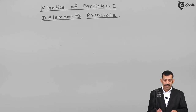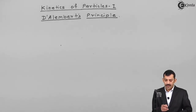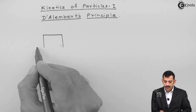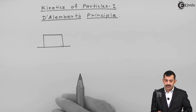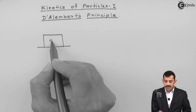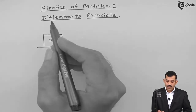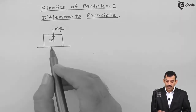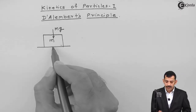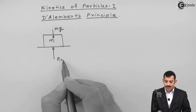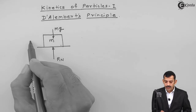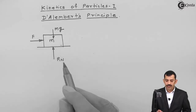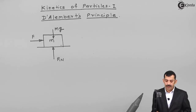Now if we will take any block of say mass here, this one is one block which is at rest on a horizontal plane. A block is at rest initially. Mass of block is m kg. Weight of block acts in downward direction, so weight of block becomes m into acceleration due to gravity. At the contact surface we get a reaction normal to the contact surface, which is Rn. Assuming smooth contact surfaces, therefore frictional force is zero.